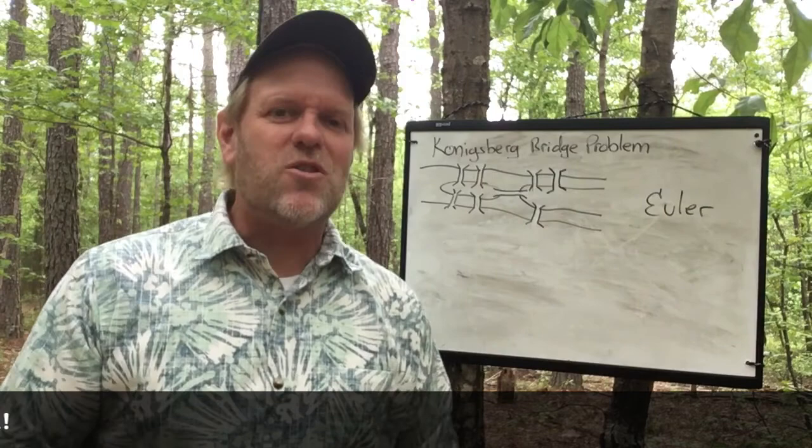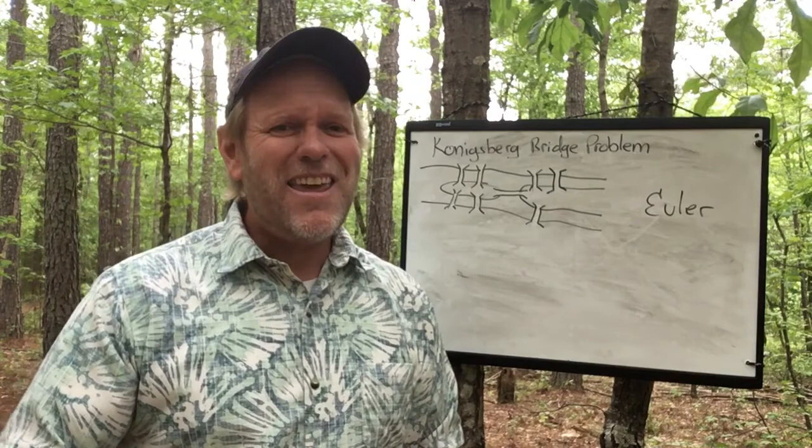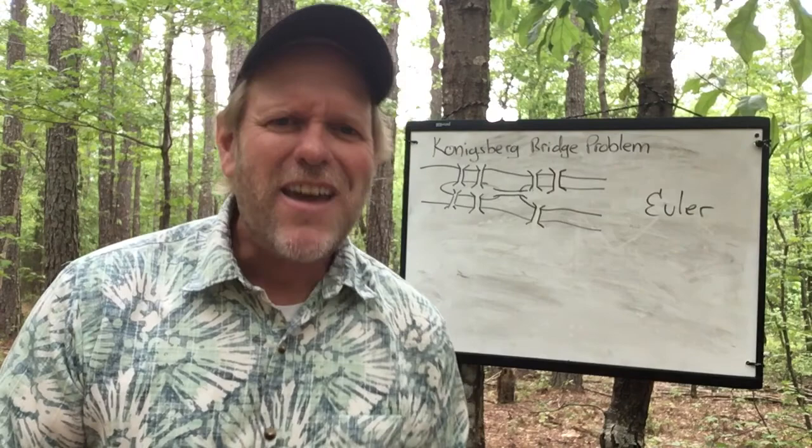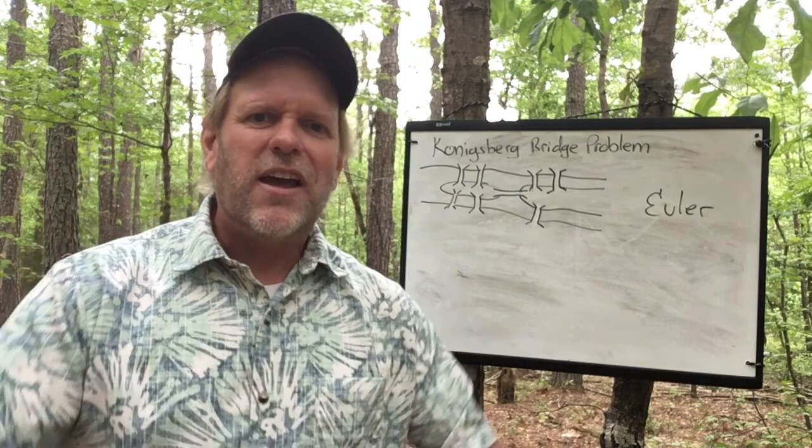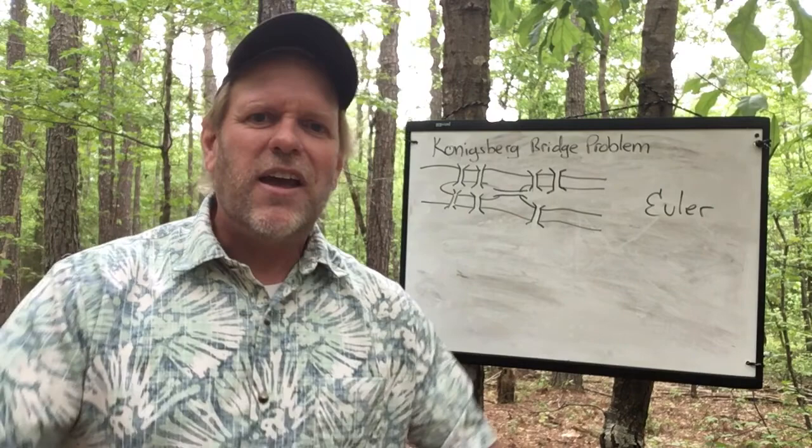Moving on from there, there was another man who came about a hundred years later. His name was William Rowan Hamilton — a very fantastic Irish mathematician who lived in the 1800s. And to all Irish out there, I apologize for my horrible Irish accent.